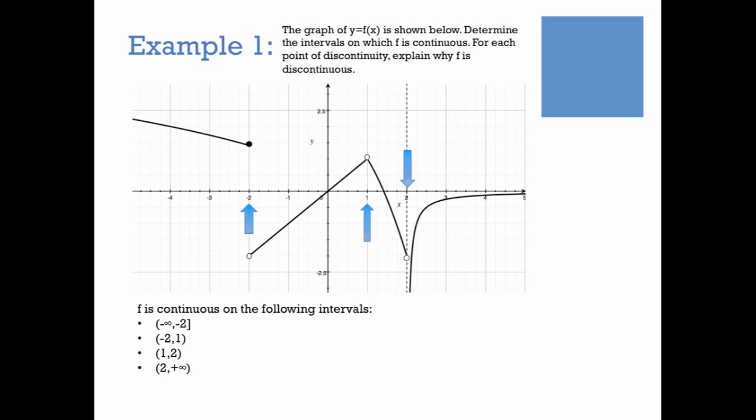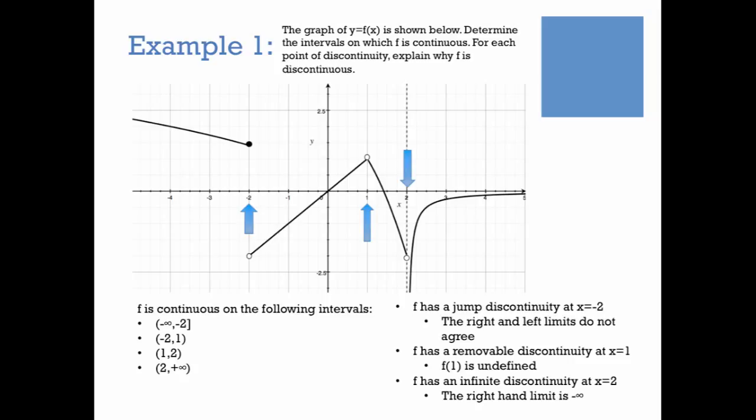In terms of why we have discontinuities: at minus 2, we've got a jump discontinuity — the right and left limits don't agree. At 1, we have a removable discontinuity, where it's like you just plucked a point out from the graph; sometimes that point is placed elsewhere, sometimes it's taken away altogether. And at 2, it's an infinite discontinuity, for obvious reasons — the function goes to infinity from one side or the other.